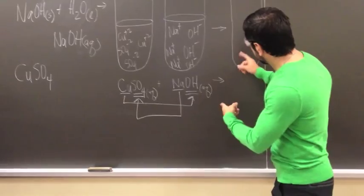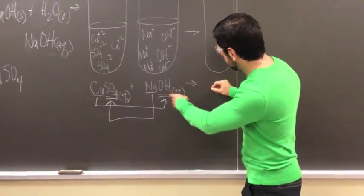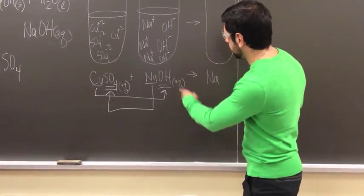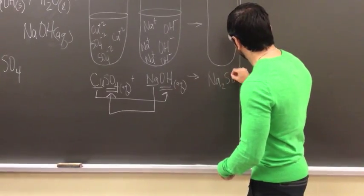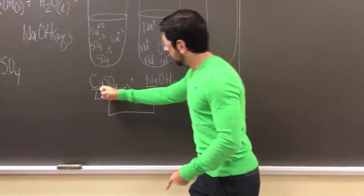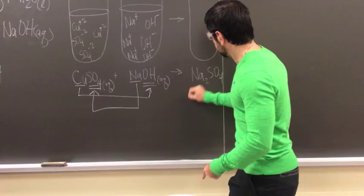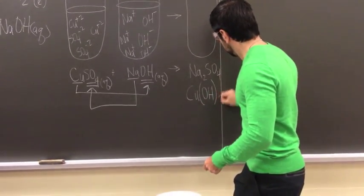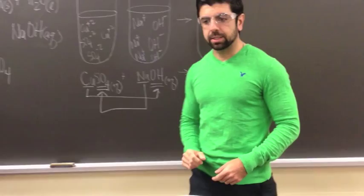So what we're in the end, we're going to form in this solution, is Na is going to combine with sulfate. Copper 2+ is going to combine with hydroxide.